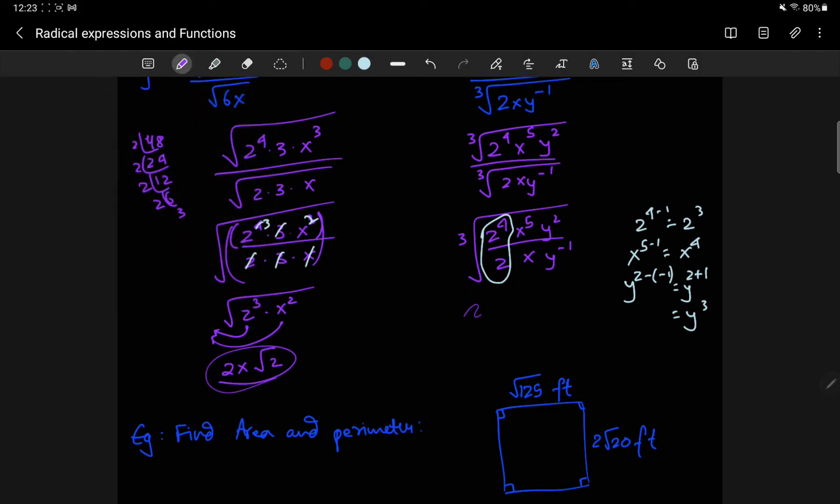So, this entire thing comes out to be cube root of 2 cubed x4 y cubed. There's a copy of 2, there's a copy of x, there's a copy of y.